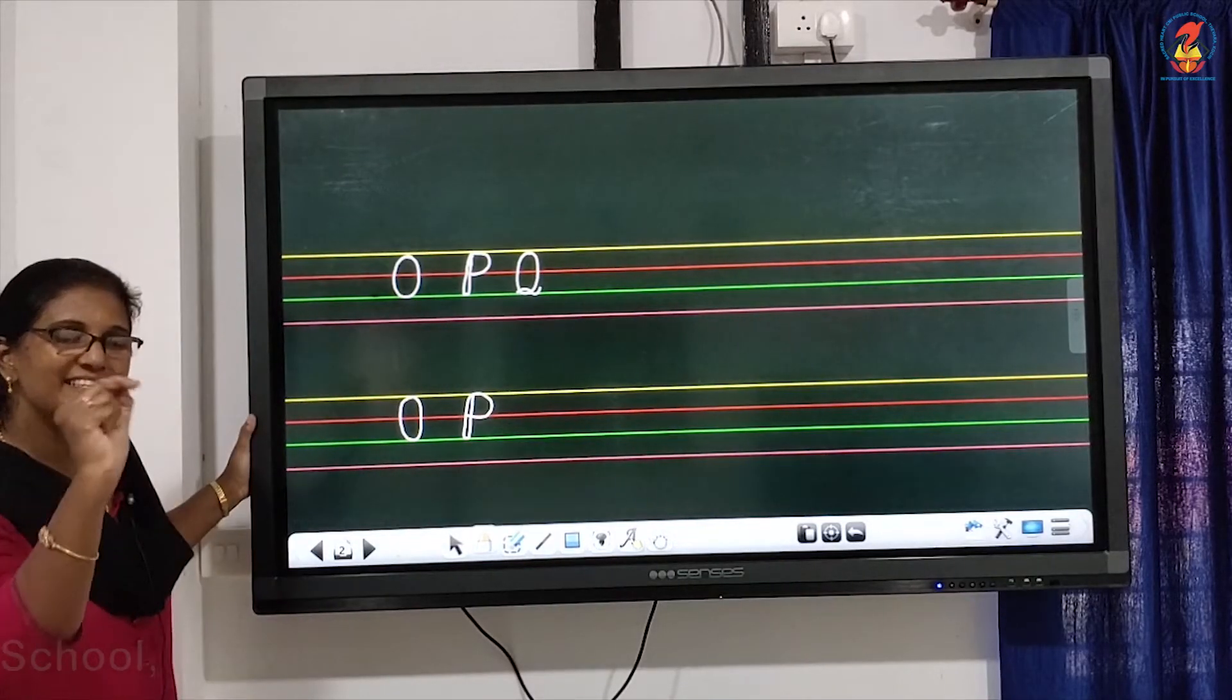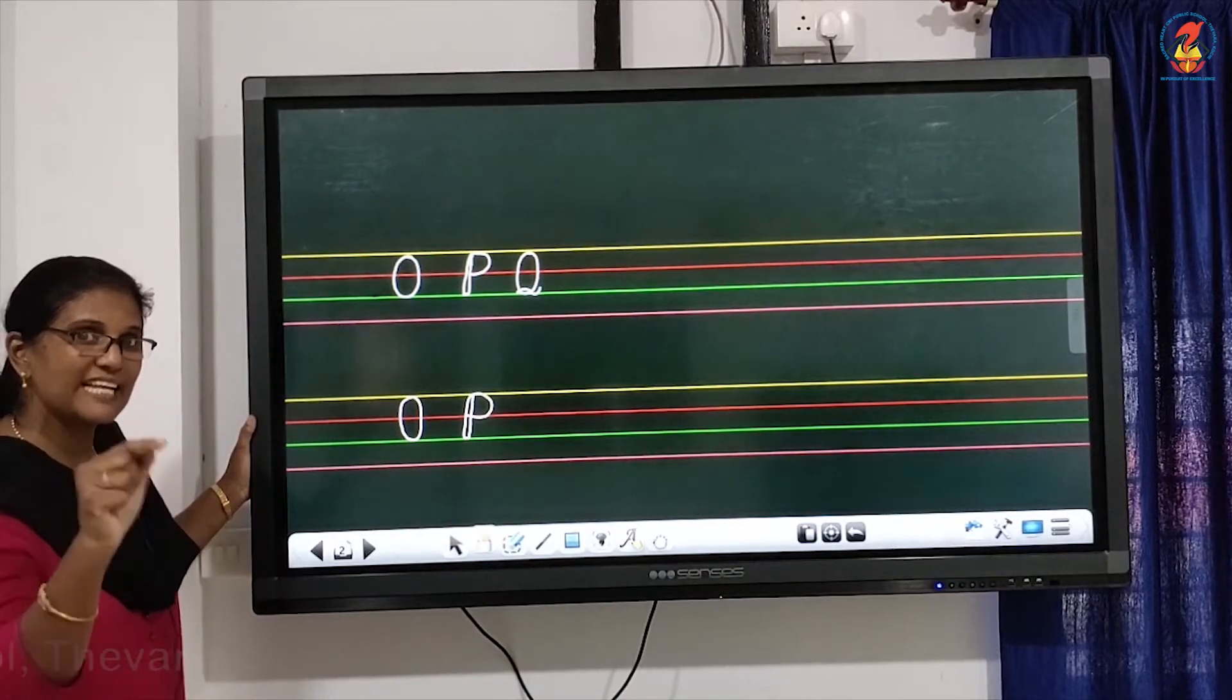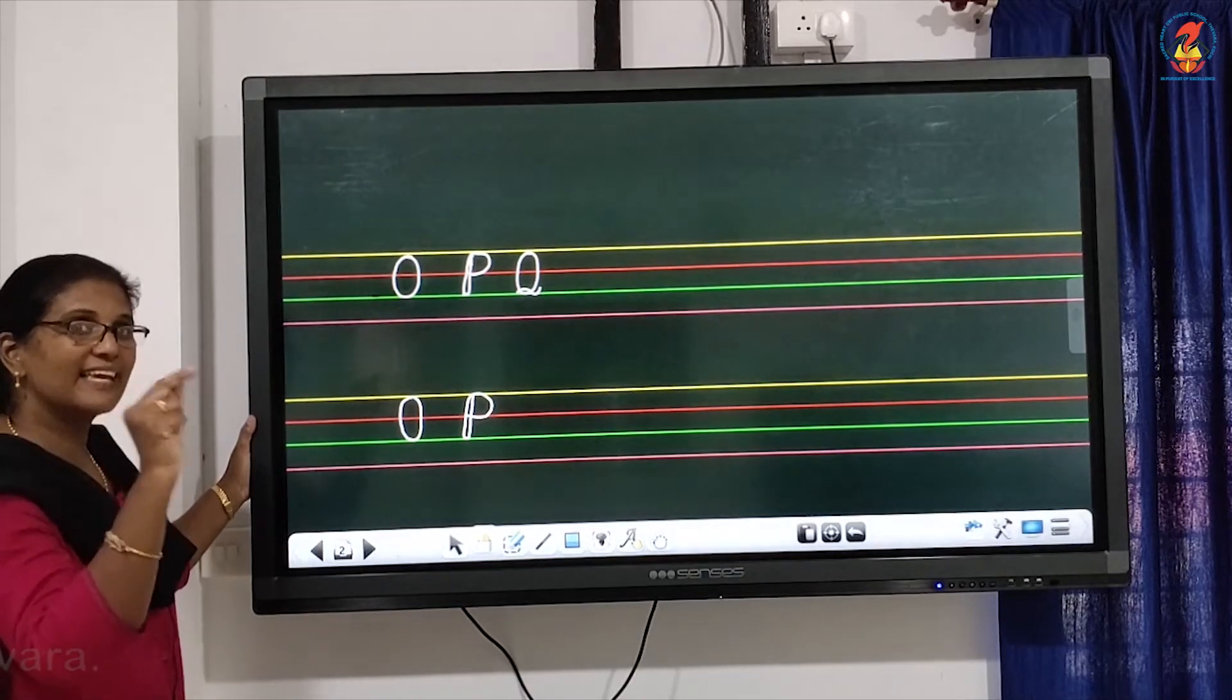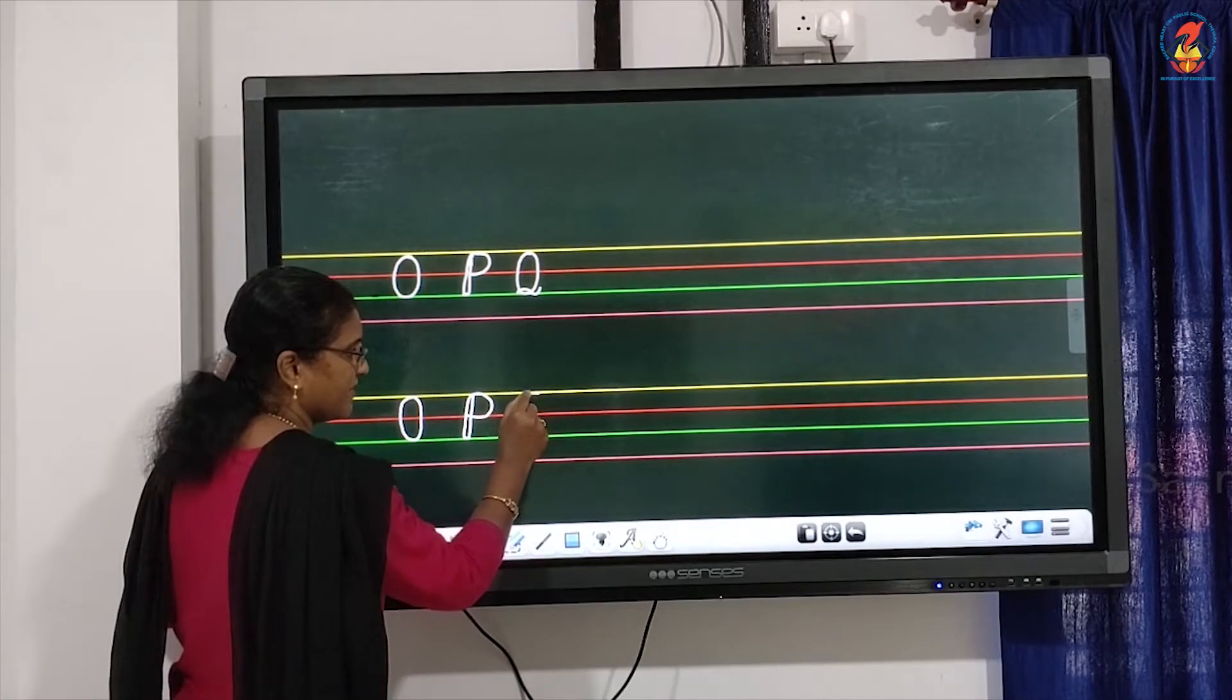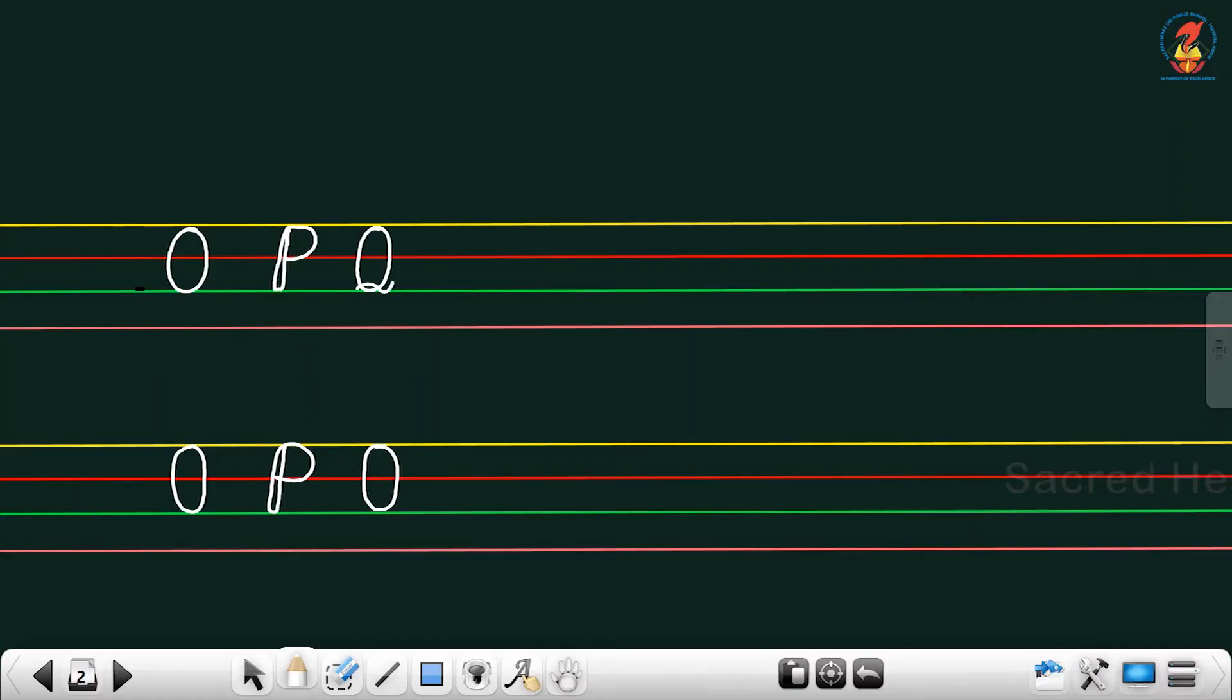It's like a cat's tail, right? When you draw a cat, you put a small tail. That's the way to write. So then you have a round like this, which is going from the first to the third line, covering the second line and a small tail like a cat. So O, P, Q.